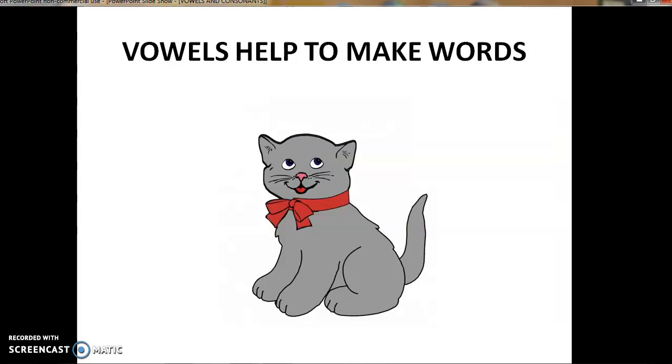Vowels help us to make words. This is the picture of a cat. C, A, T, Cat. The vowel A has helped us to make the word cat over here.